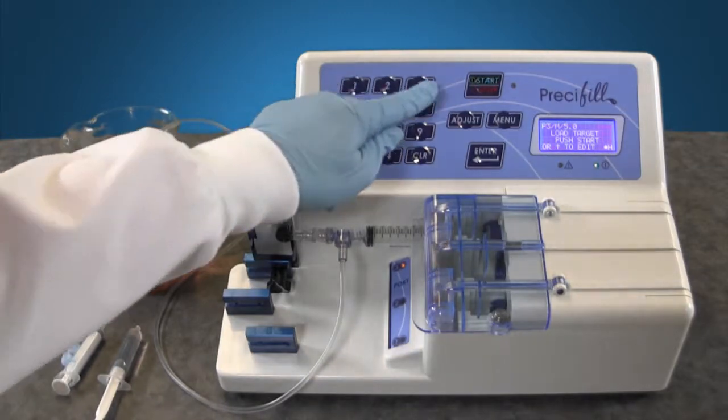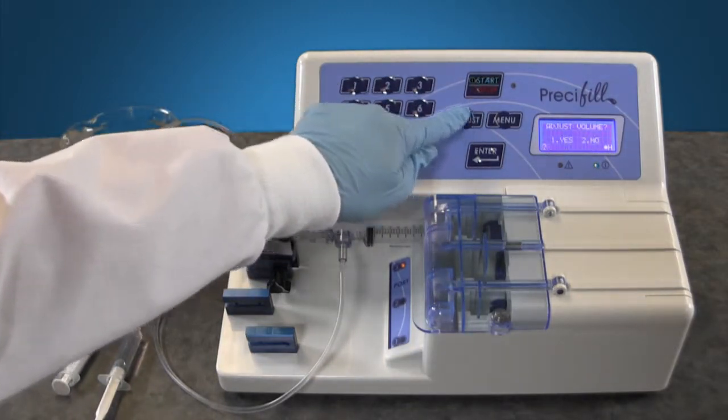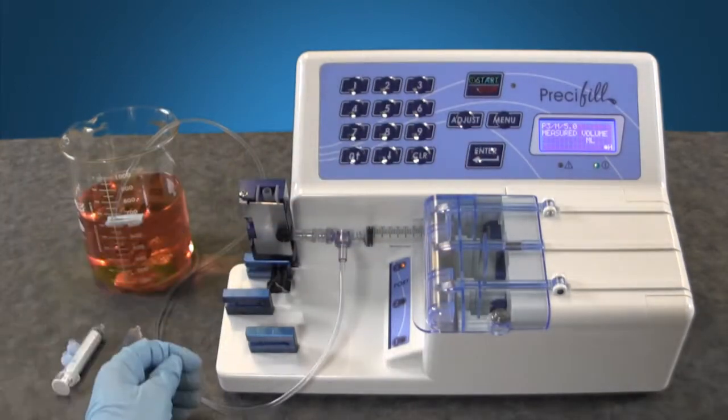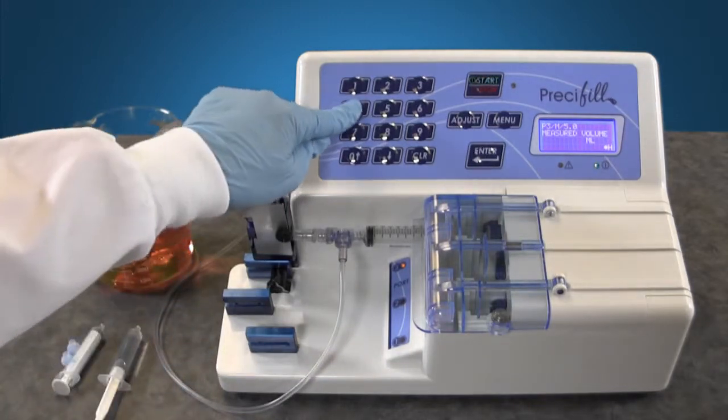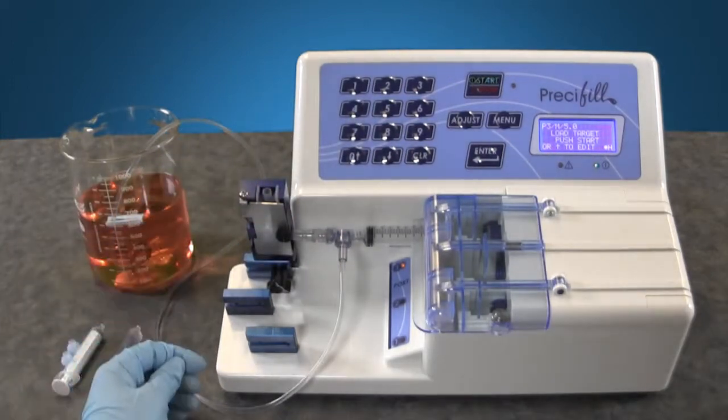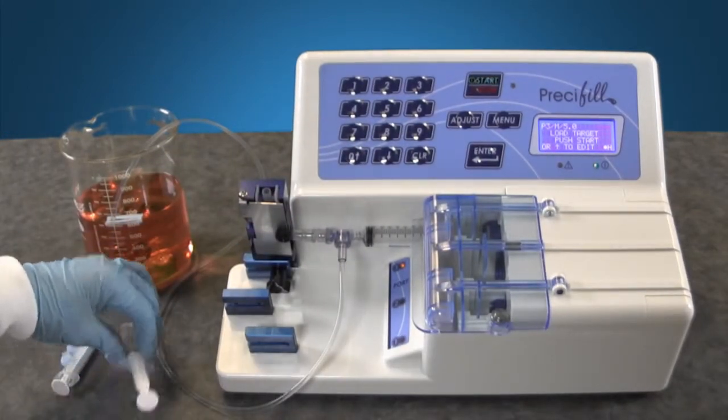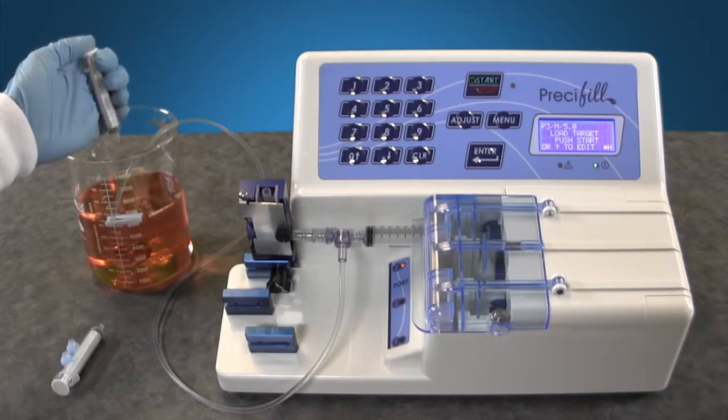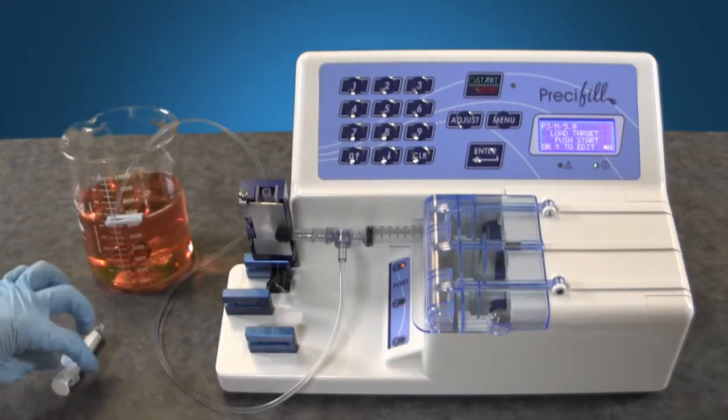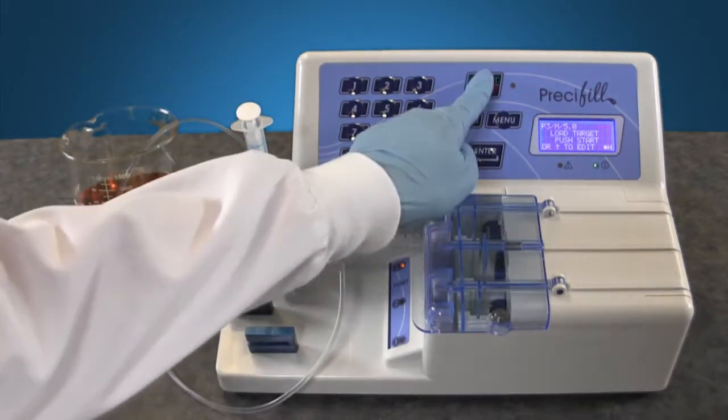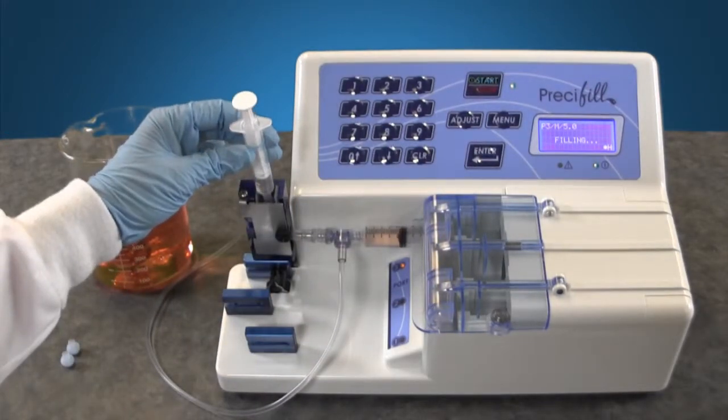Simply press the adjust button. Press 1 for yes and enter. Enter in the volume that the pump filled, in this case 4.6 mil, and press enter. Dispel the solution back into the beaker and use a new oral dispenser to fill. With the dispenser now filled accurately, you can complete your batch requirements.